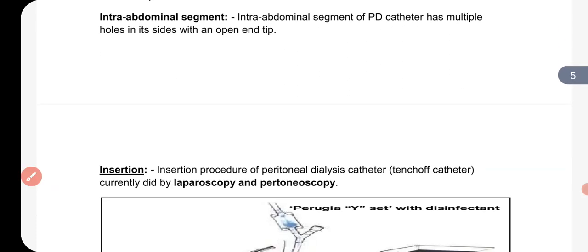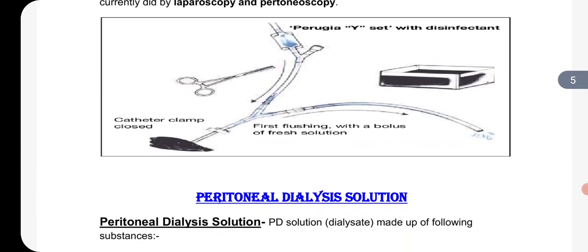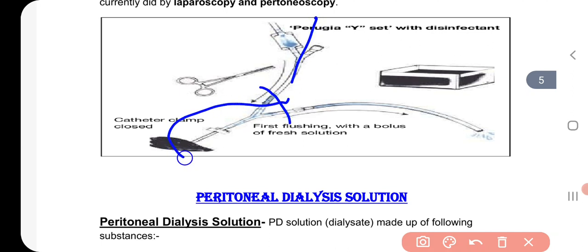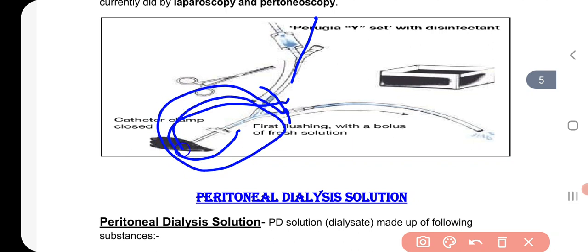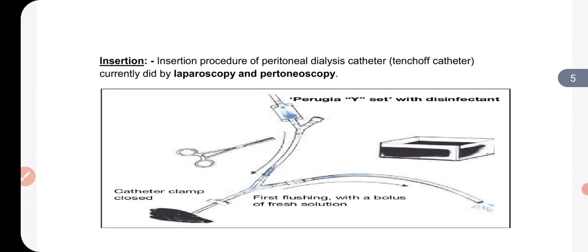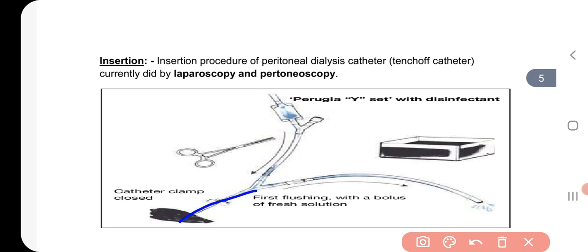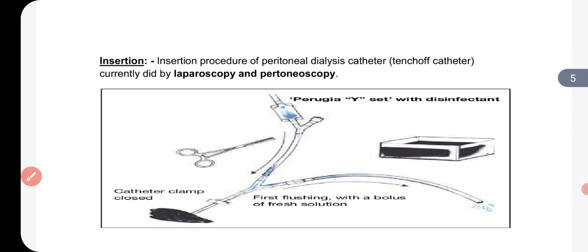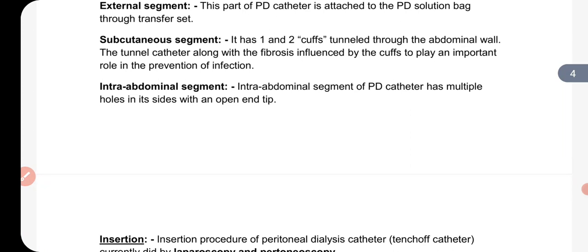Since this catheter is divided in two parts, one part is on one side and one part is on the other side. The external part after peritoneal dialysis gets covered by a bandage, and in this way, this part helps prevent infection in peritoneal dialysis. The next part is the intra-abdominal segment. This is the last part, which goes into the abdomen. The tip is straight, but on the sides there are also small holes. The PD catheter has multiple holes on its sides with one hole at the end tip.